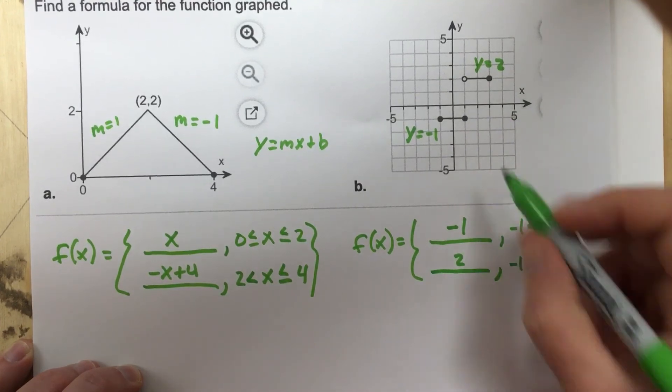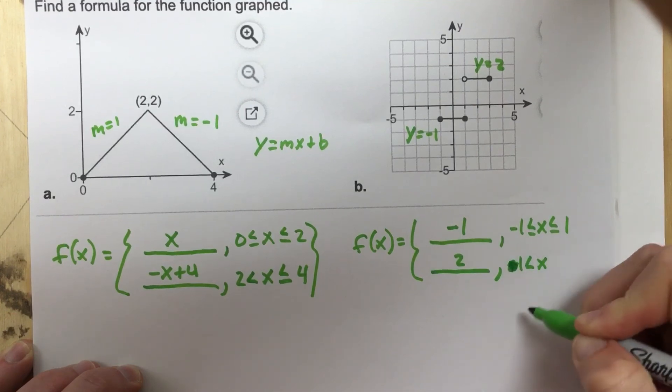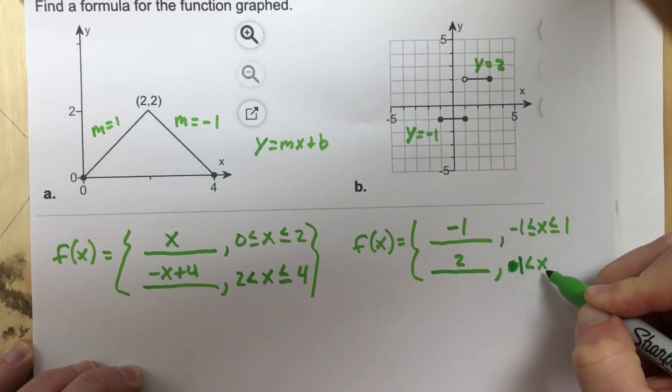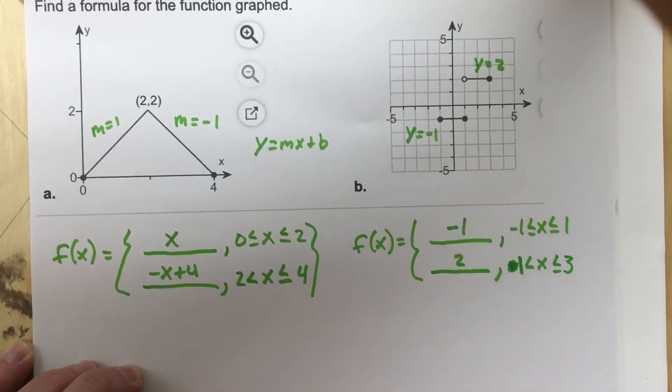I didn't mean to say negative 1. That's positive 1, sorry. Positive 1. So that's positive 1 less than x less than or equal to 1, 2, 3 less than or equal to 3. And so that's the other piecewise function.